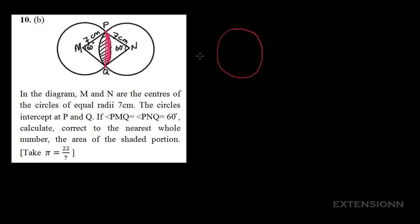Consider a circle with center M. We draw the two radii out to point P and point Q, then draw the chord down from P to Q. This gives us half of the shaded area we're looking for. We'll find the area of this portion, then multiply by two to get the total shaded area.